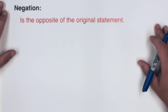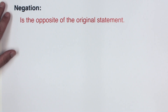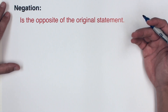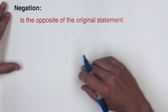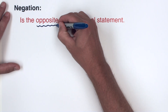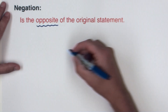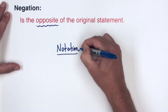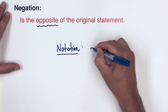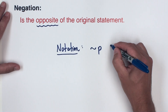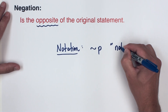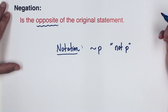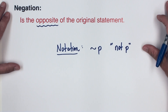Next we're going to build up to what we call related conditionals, and the first thing we need is the idea of negation. In logic, negation is simply the opposite of the original statement. As far as notation goes, symbolically you might see it expressed as not P — that symbol representing the negation. So the negation is just the opposite, and we're going to do a couple of example problems writing the opposite.